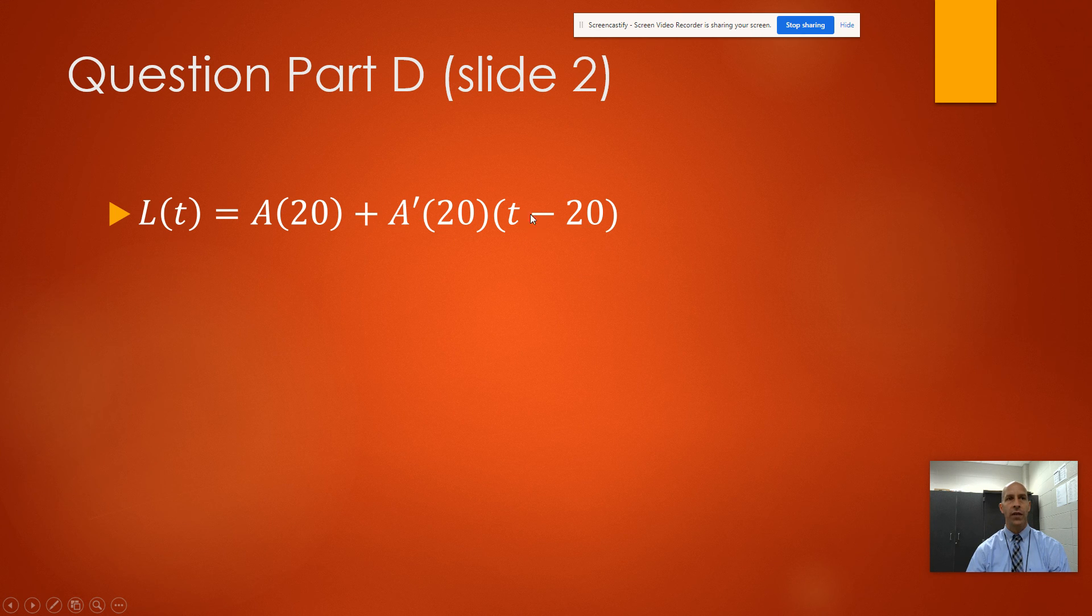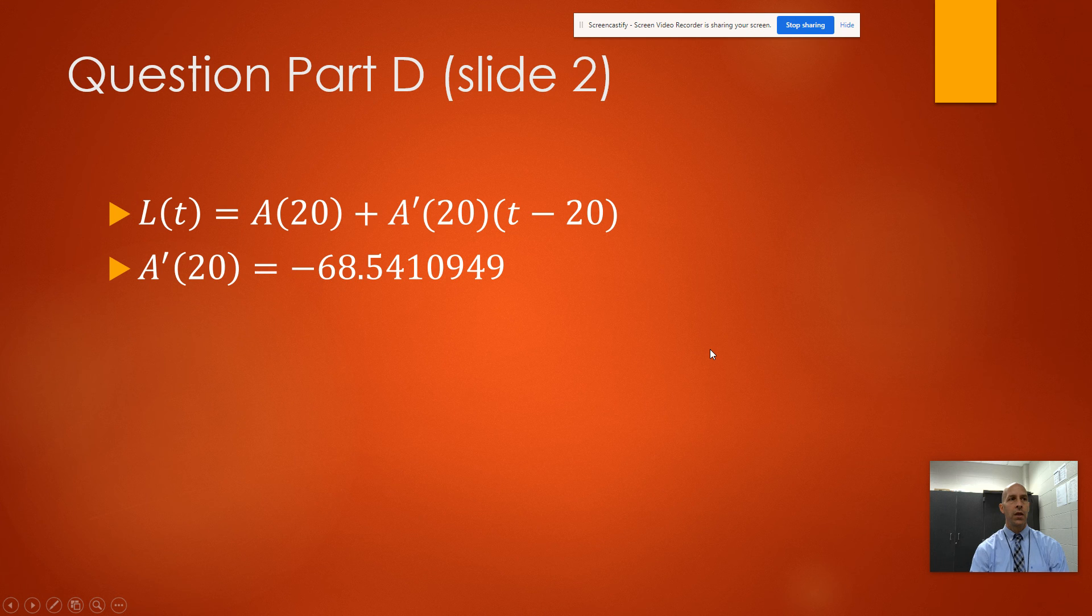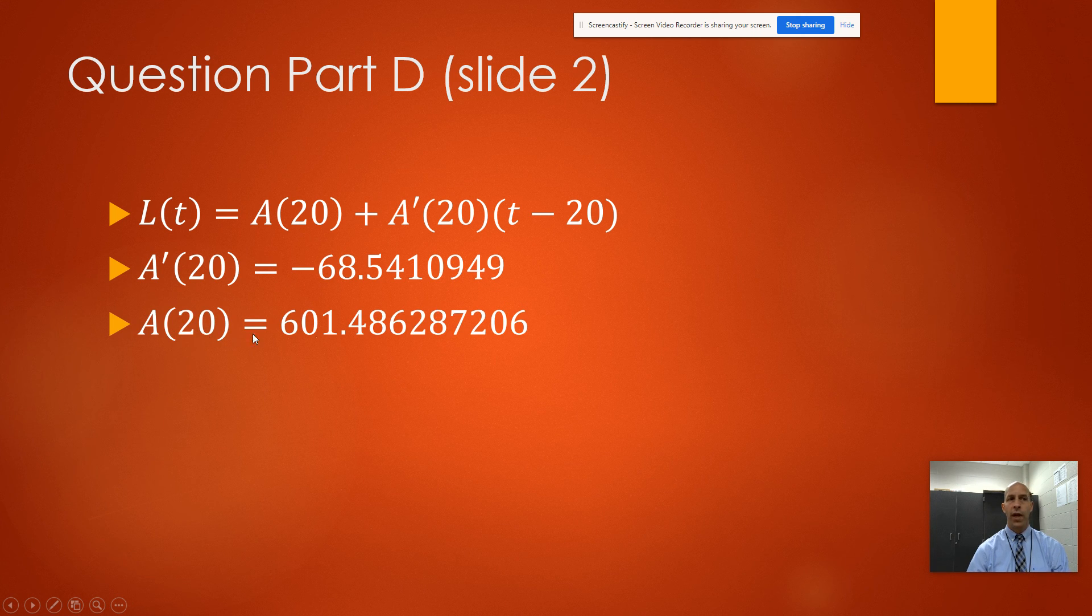So A'(20) - that's going to give us the slope for this linear approximation - is negative 68.541. A(20), I would just plug that into my graphing calculator, and it turns out to be 601.486.